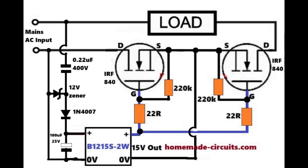First, you can see we have our mains AC input on the left side and a load connected on the right side. Now, AC keeps changing direction every half cycle, so one single MOSFET cannot handle AC properly.